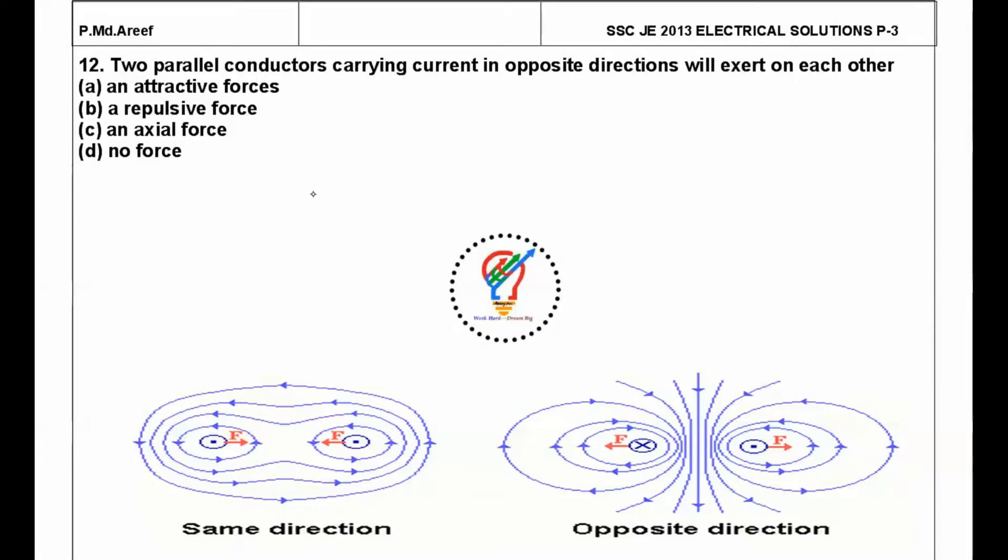So here according to dot convention, if the current entering into the screen, it indicates cross. If the current is entering towards you, it indicates the dot. Here you can see that the current is entering towards you, so that means they are carrying the current in same direction. When carrying current in the same direction, they will have attractive force.